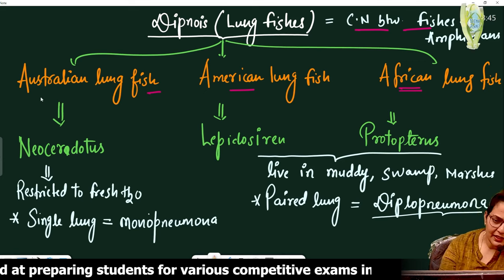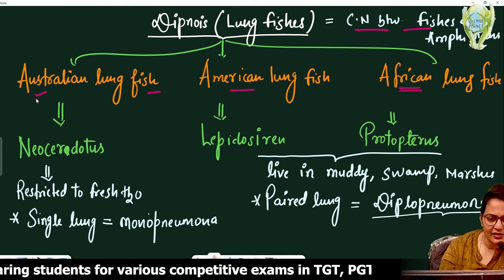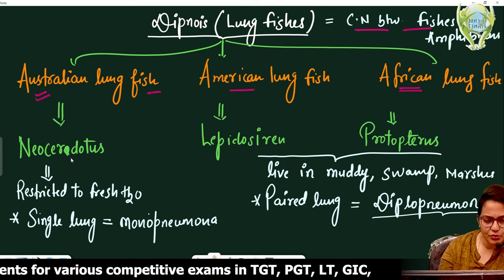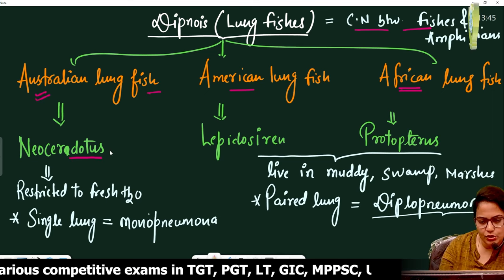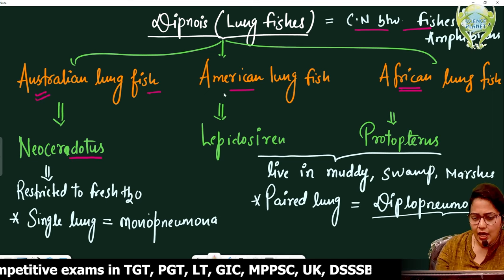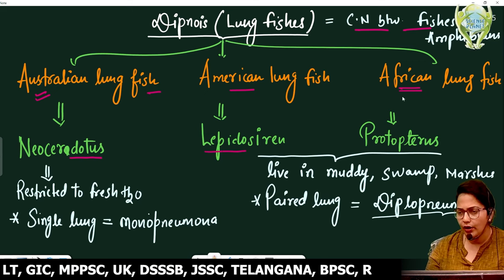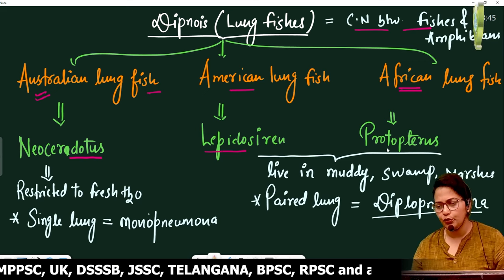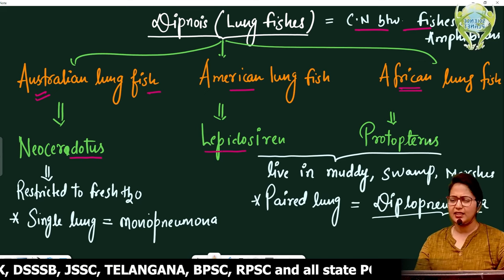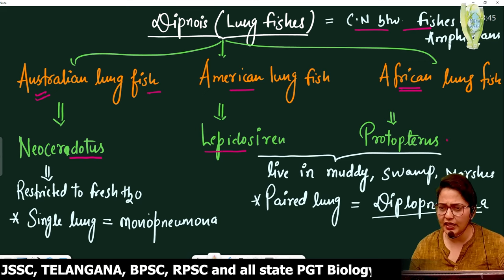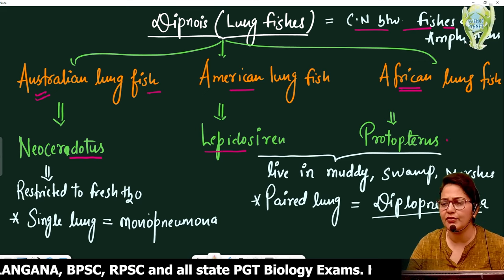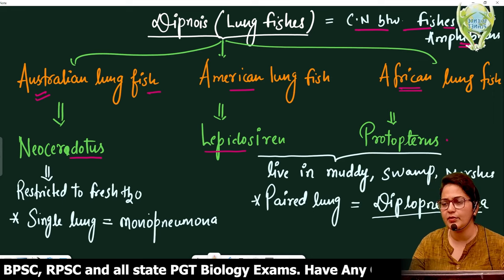First, we will see Australian lung fish, which is called Neoceratodus. American lung fish is called Lepidosiren. African lung fish is called Protopterus. Protopterus is an important connecting link between fishes and amphibians.